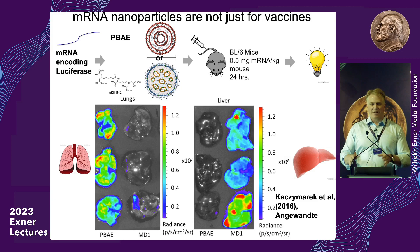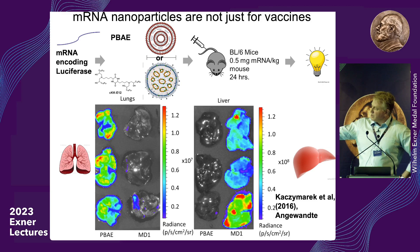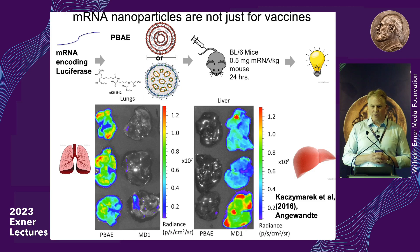When we deliver to an animal and isolate the organs to see whether they glow, the first nanoparticle delivers luciferase to the lungs but not the liver, whereas the second nanoparticle delivers to the liver but not the lungs. The point is that by changing the chemistry, it's possible to have nanoparticles travel to other parts of the body. There's a lot of work right now adapting these delivery systems to a range of different diseases and various organs.